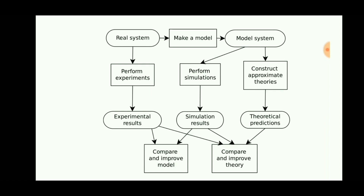There are three basic systems: the real system, which is any research department that is making a model, and the models are combined into a system. The real system performs experiments of the product by manufacturing a prototype and getting the experimental results, then making a model.